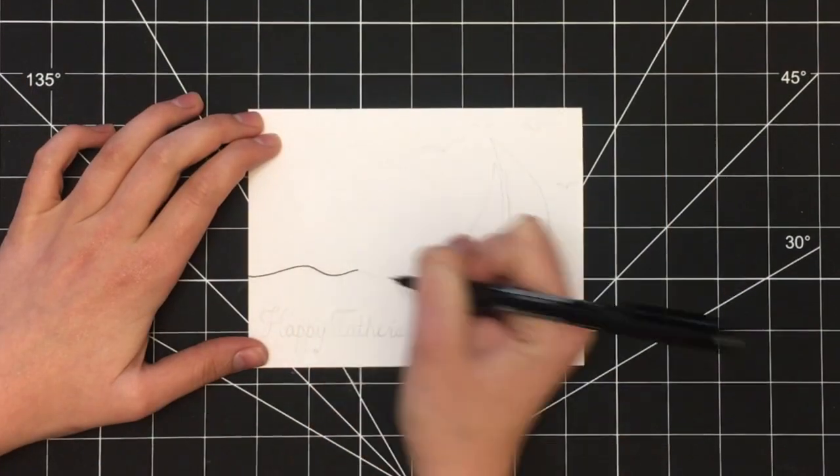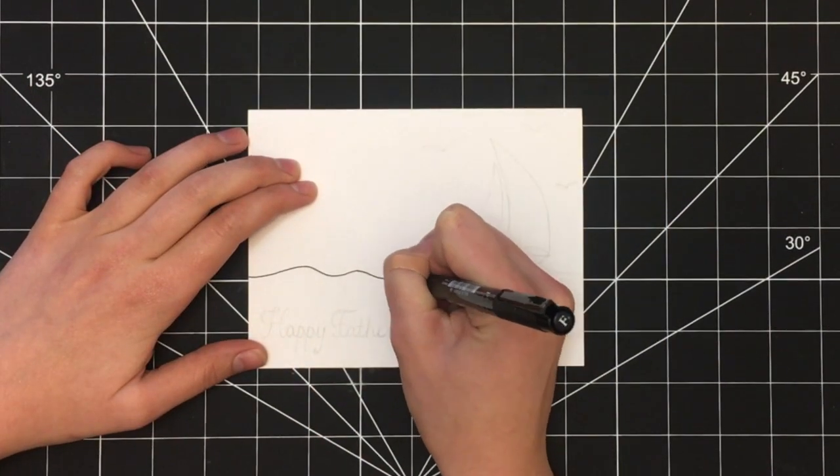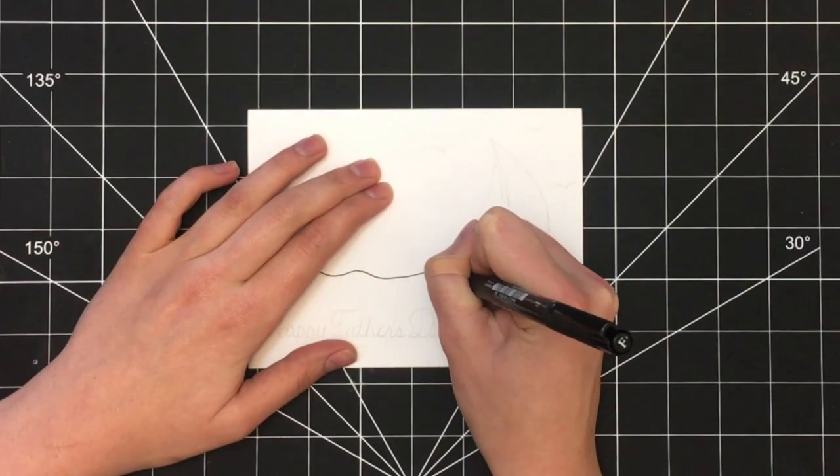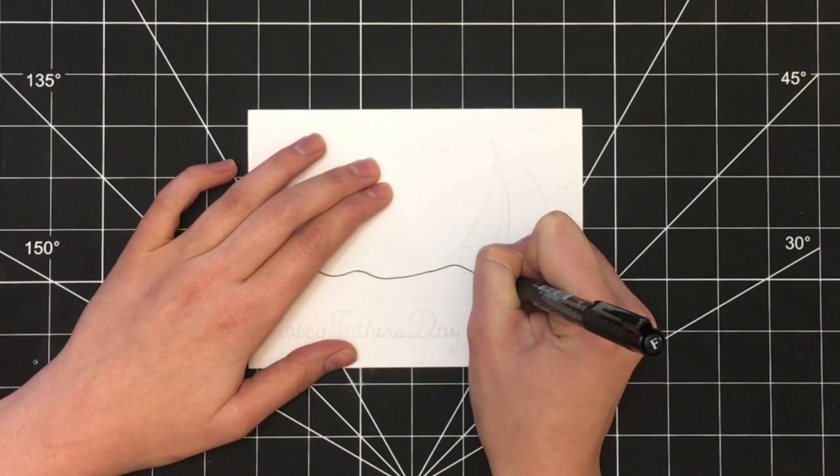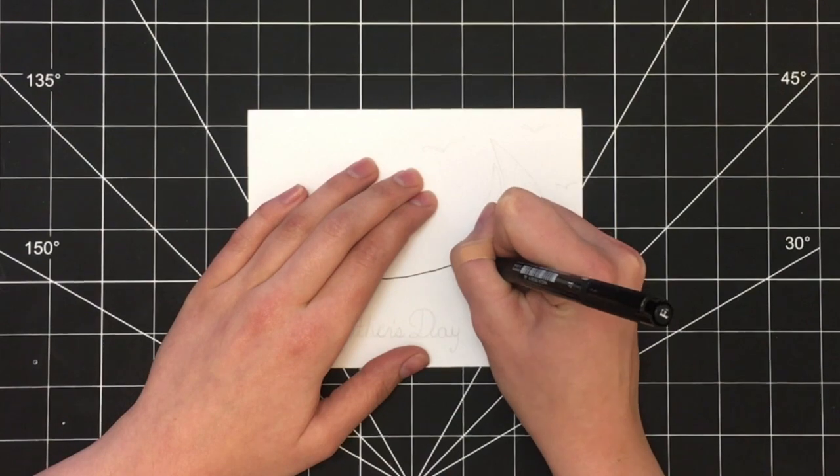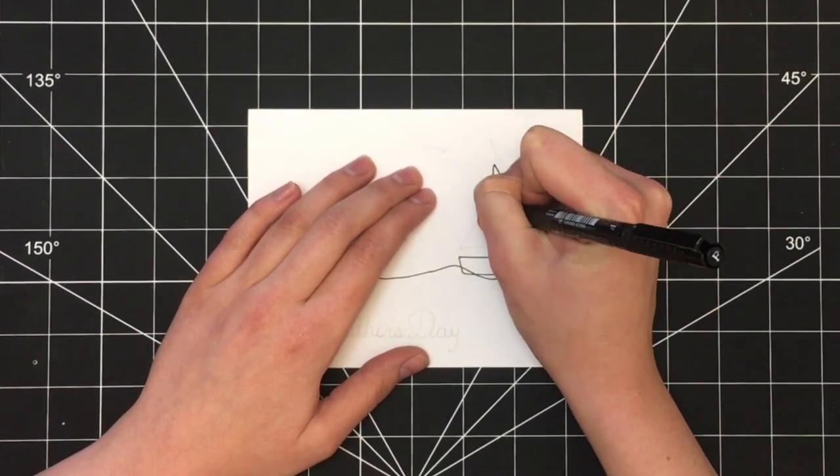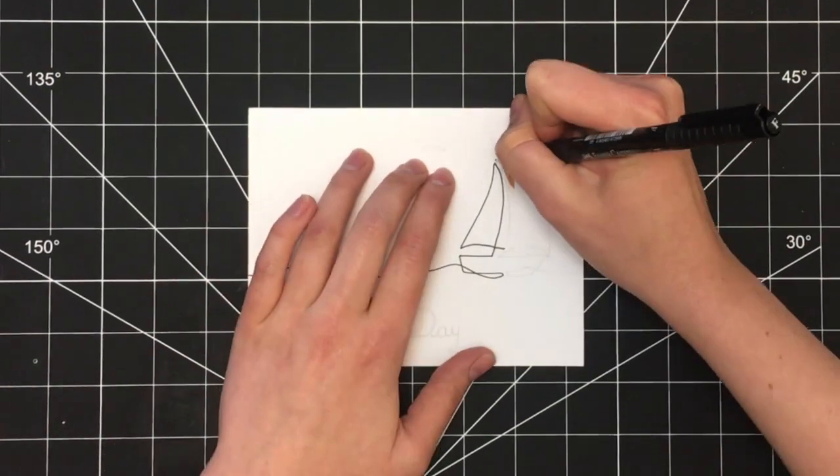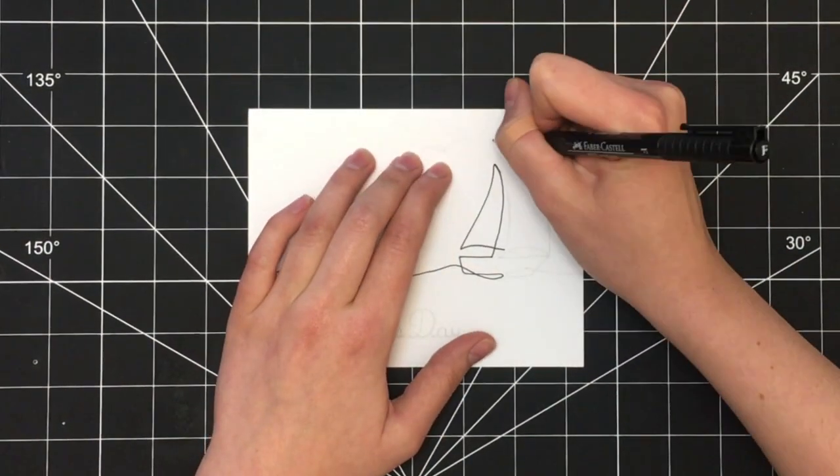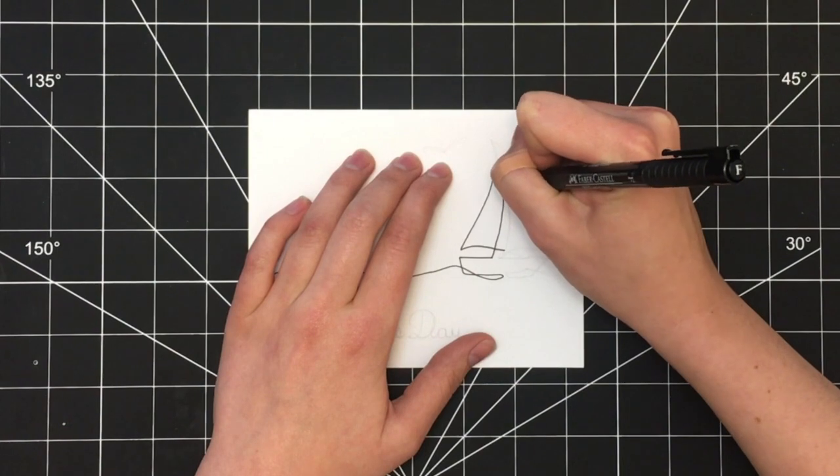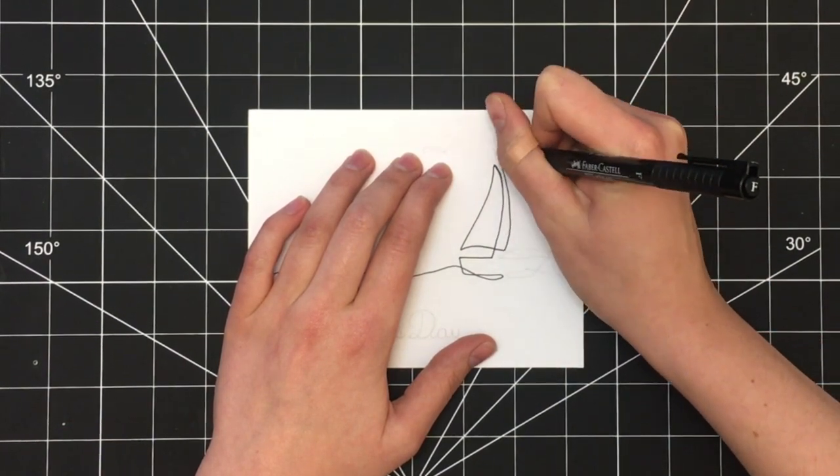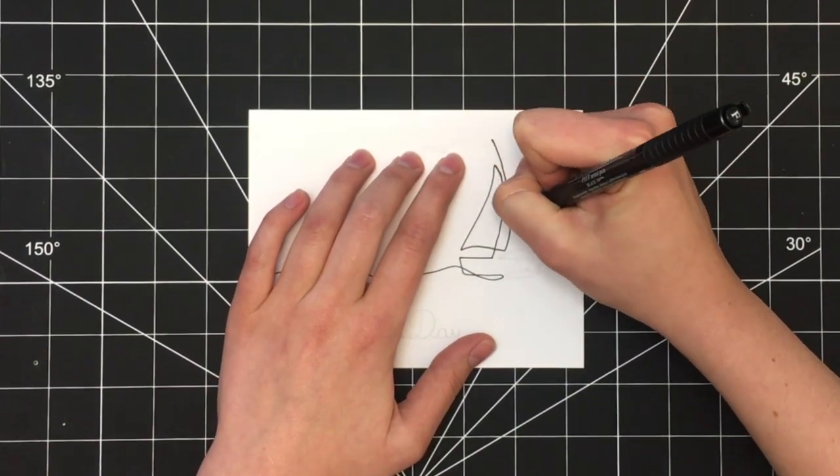Once you have the design drawn out in pencil, use your thin black pen to trace over everything. Here I'm using a Faber-Castell pen in size F. I started with the waves and then I continued on to the sailboat. What's unique about this design is that actually the waves and the sailboat are all one pen stroke or continuous line so it gives it quite a unique look.